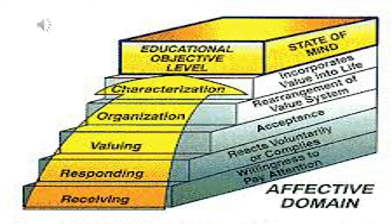In summary of the taxonomy of educational objectives: in receiving, it talks about the student's willingness to pay attention; in responding, the student reacts voluntarily or complies; in valuing, the student accepts the idea or phenomenon; in organization, the student rearranges his or her value system in accordance with what was received, responded to, and valued; and lastly, in characterization, the student incorporates a value into life — applying what he or she learned from the idea, information, or phenomenon. These are the five levels of educational objectives by David Krathwohl.